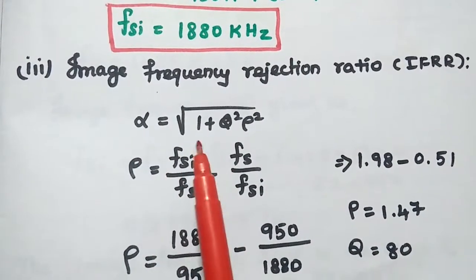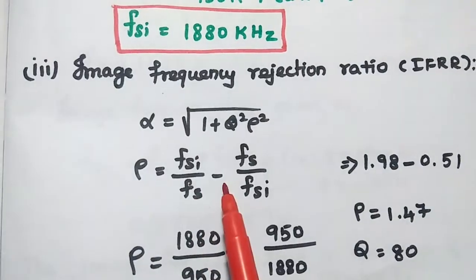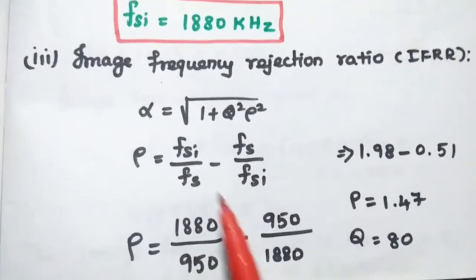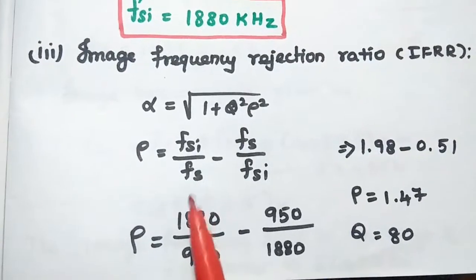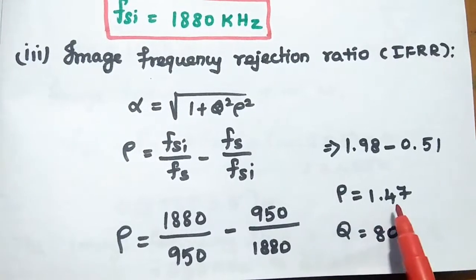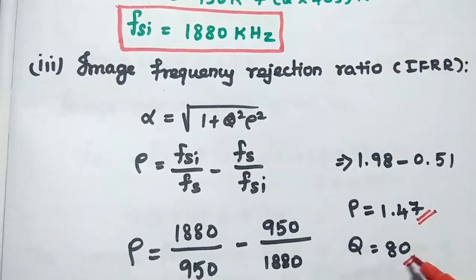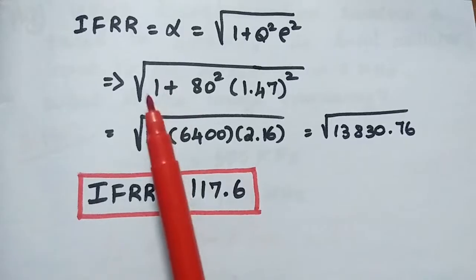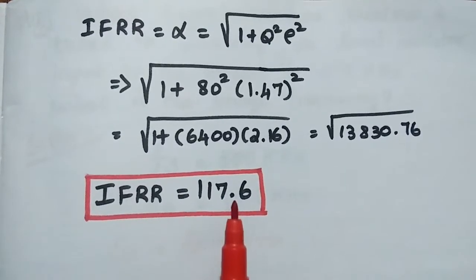Next, we find the image frequency rejection ratio IFRR, which equals the square root of 1 plus Q squared times rho squared. Here, rho equals FSI divided by FS minus FS divided by FSI. Substituting FSI equals 1880 kHz and FS equals 950 kHz, we get rho as 1.47. With Q equal to 80, substituting these values into the formula, we get IFRR as 117.6.